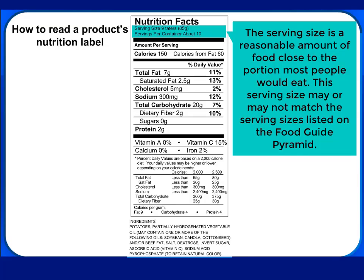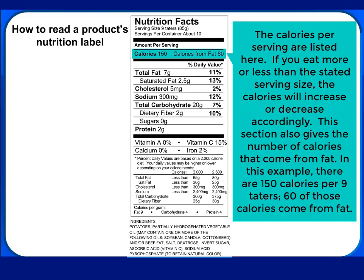The serving size is a reasonable amount of food close to the portion most people would really eat. This serving size may or may not match the serving sizes listed on the Food Guide Pyramid. The calories per serving are listed here. If you eat more or less than the stated serving size, the calories will increase or decrease accordingly. This section also gives the number of calories that come from fat. In this example, there are 150 calories per serving, and 60 of these calories come from fat.